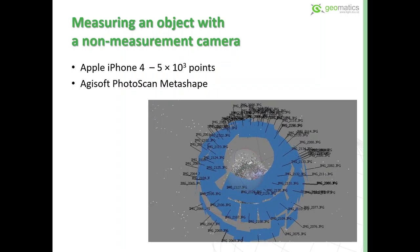The second method used was structure from motion. The camera we used was on a mobile phone, which is commonly available to most of us — specifically a relatively old but functional Apple iPhone 4. The software chosen for processing the images was Agisoft Metashape.